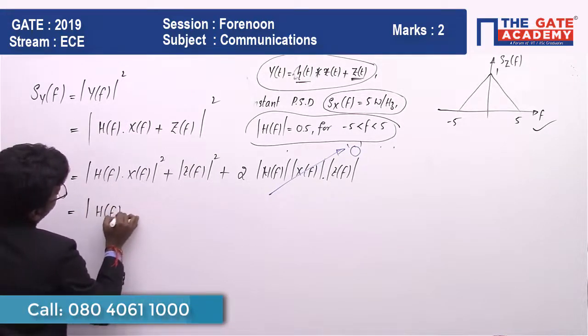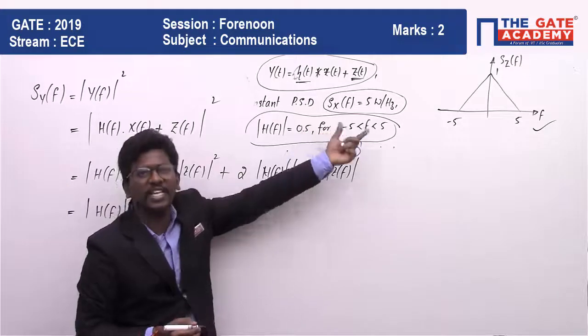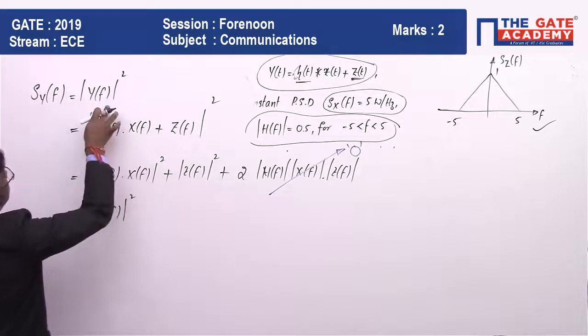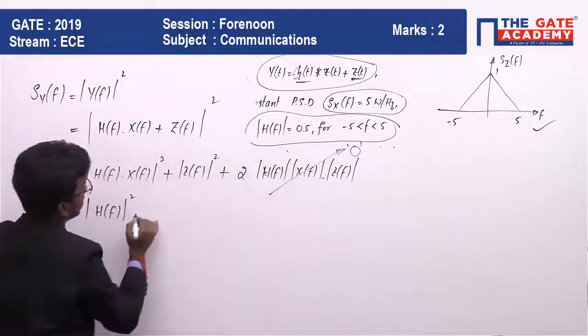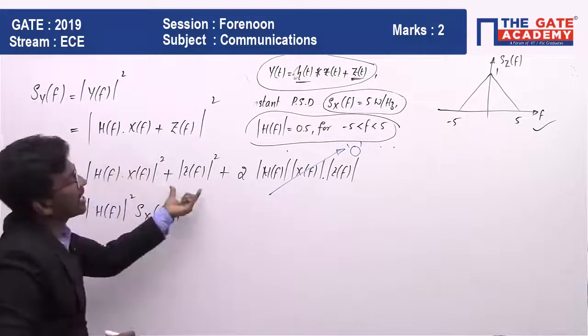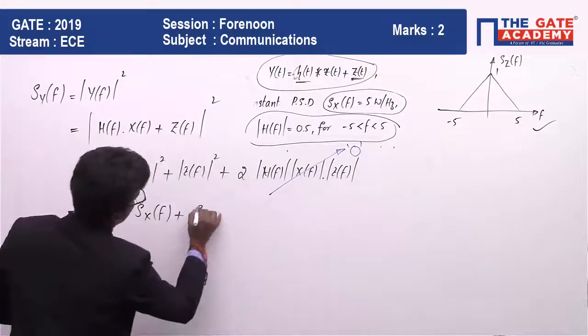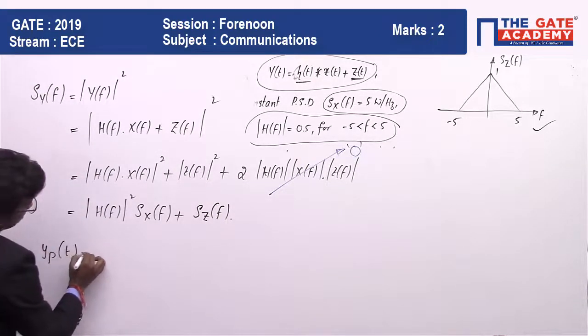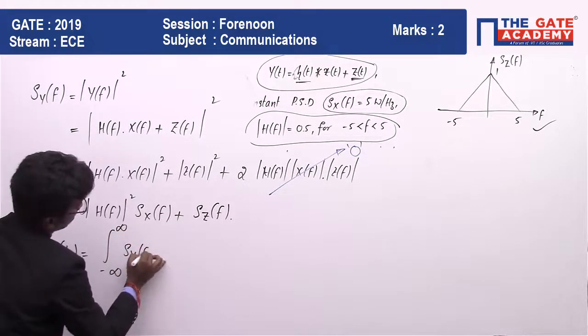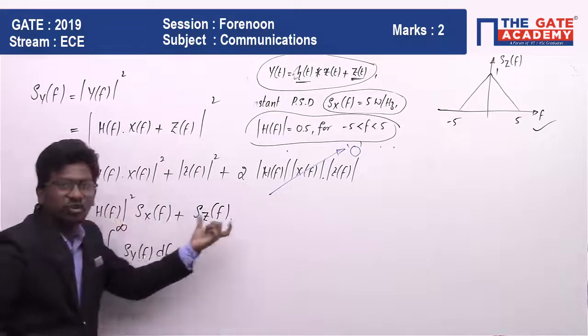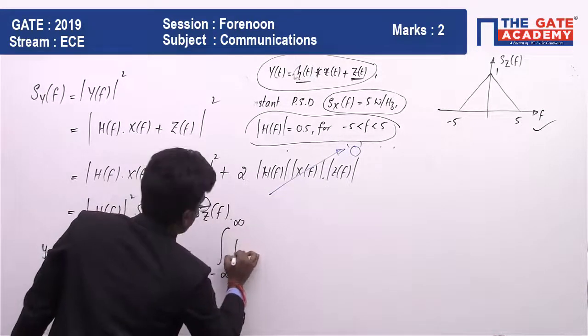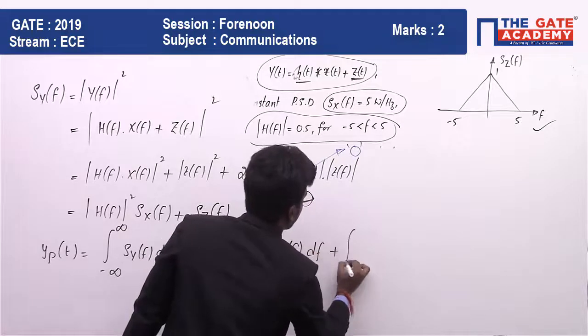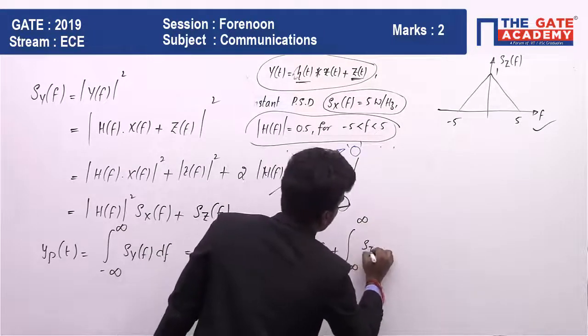First one is |H(f)|^2. He has given H(f) value and range. For this, |X(f)|^2 is the power spectral density, which is Sx(f). Square of transform is the power spectral density, that is Sz(f). What we need is output power Py(t), which is area under the power spectral density: integral of Sy(f) df, having two parts.